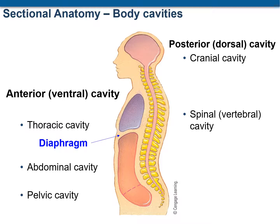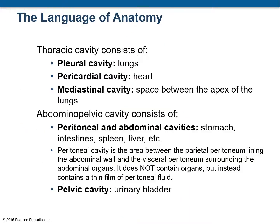This figure shows you the location of all the body cavities and sub-cavities. See how the diaphragm is separating the thoracic cavity from the abdominal cavity. The ventral body cavity consists of three sub-cavities: the thoracic cavity, abdominal cavity, and pelvic cavity. Sometimes we join the abdominal and pelvic cavities and call it the abdominopelvic cavity, because there is no physical structure separating them — unlike the thoracic cavity which is separated from the abdominopelvic cavity by the diaphragm.